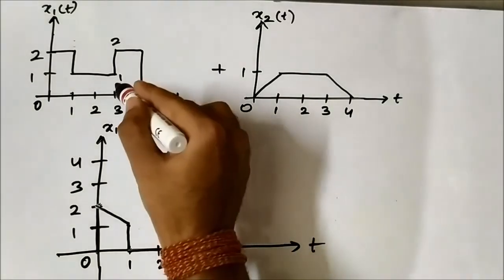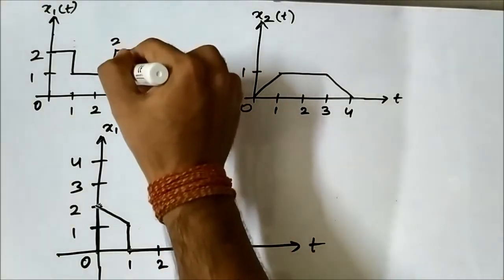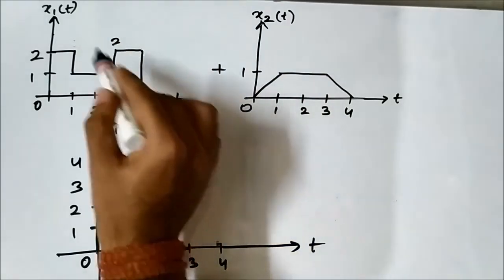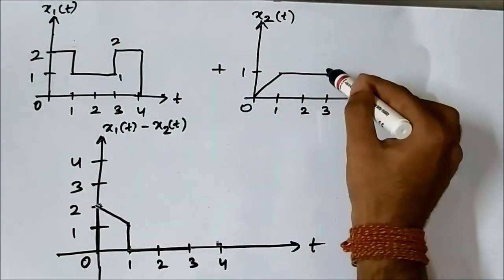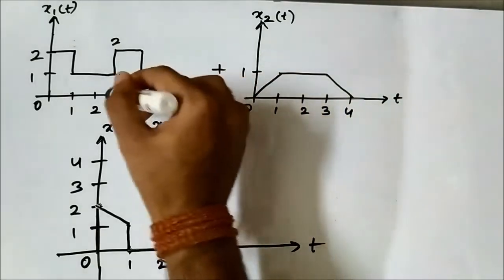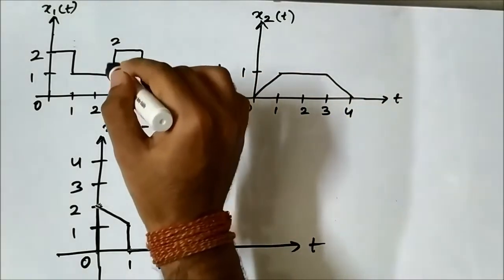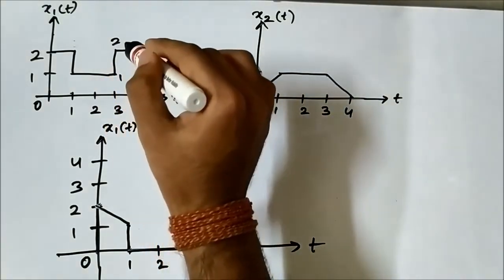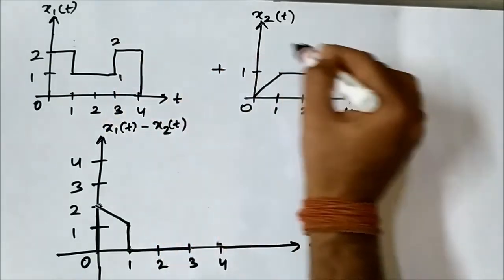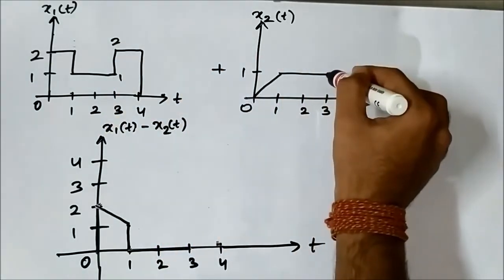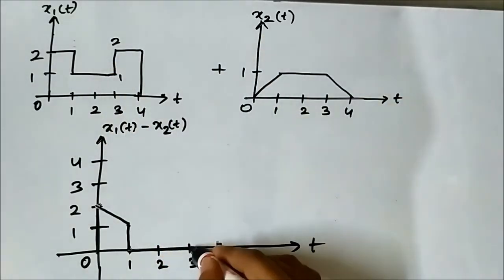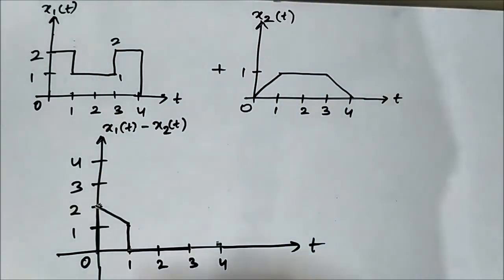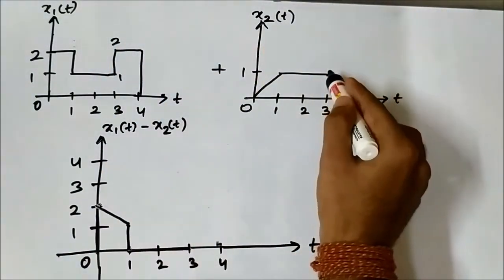At t equals 3 there is a sharp upward transition from 1 to 2 in x1(t), but x2(t) is still 1 at t equals 3. For the initial value 1: 1 minus 1 equals 0. For the final value 2: 2 minus 1 equals 1. So there is an upward transition in the result at t equals 3.